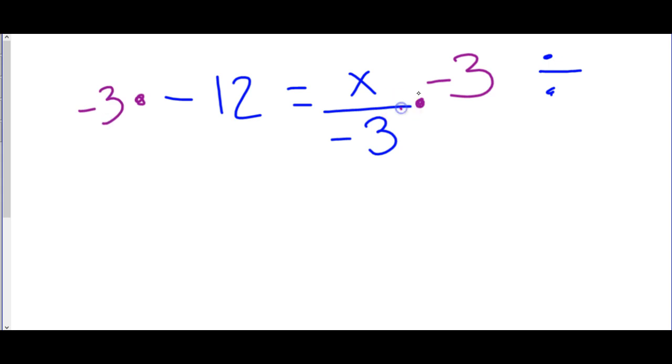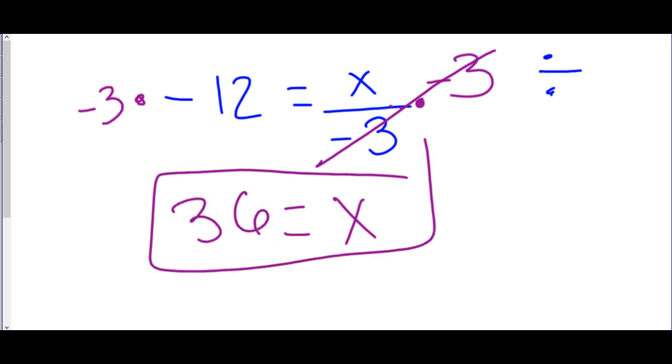Again, the divide and the multiply are opposites, so that gets rid of the two numbers we were working with. We can just bring the x down now, and then on the left side, we're just going to multiply negative 3 times 12 is 36. So that ends our discussion on solving equations.